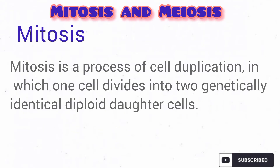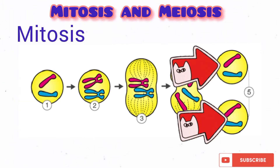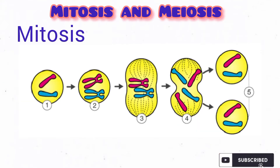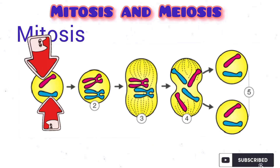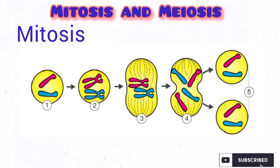Mitosis is a kind of cell division in which one cell divides into two daughter cells. Both the parent and the daughter cells are genetically alike, and both are also diploid. As you can see from the diagram, the parent cell is diploid, meaning the chromosomes occur in pairs — and the daughter cells are also diploid, with chromosomes occurring in pairs.